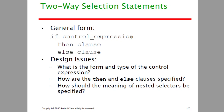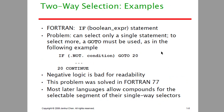In a two-way selection, if the condition is satisfied you proceed accordingly. Design issues include: what is the form and type of the control expression, how the then clause and else clause are specified, and how nested selections are handled. In Fortran, if there is a boolean expression you can select only a single statement, and the go-to statement is used for program control.